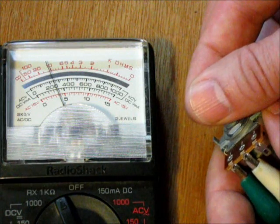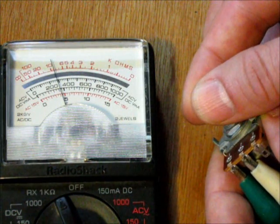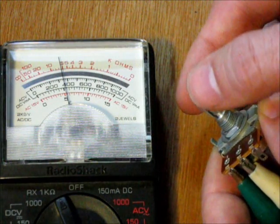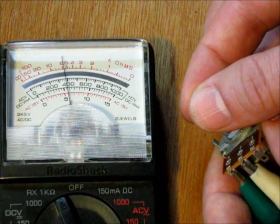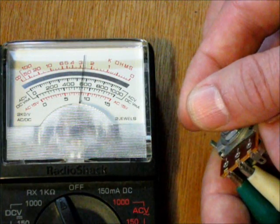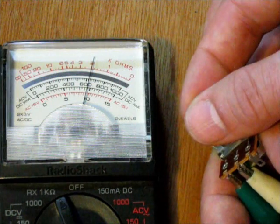So now I can adjust the variable resistor, and you can see the needle moving. Now I have 6,000 ohms. There's 4,000. There's 2,000.